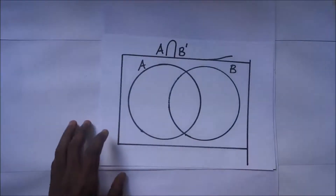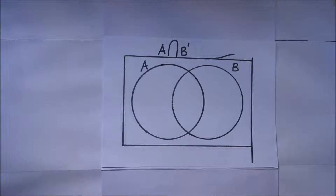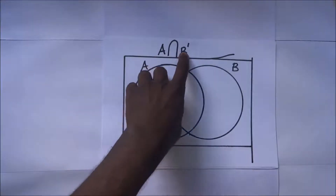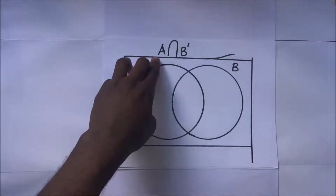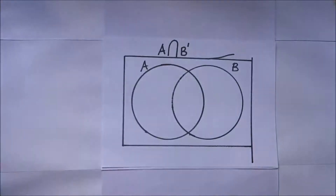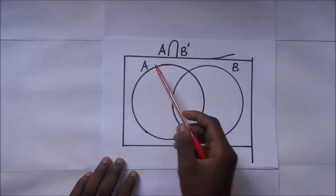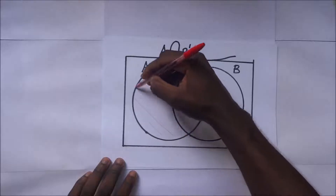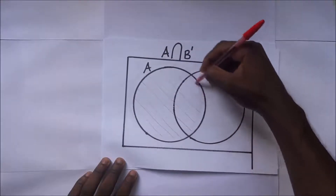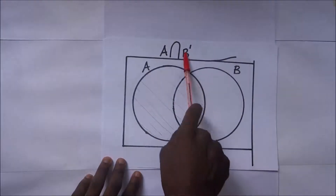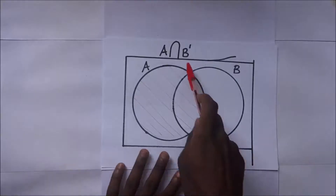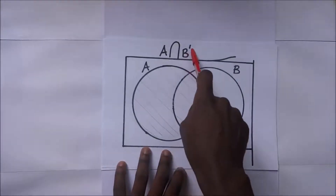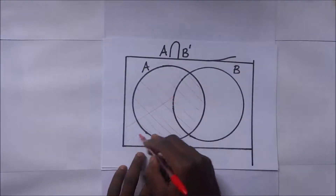Now we have A intersection B complement. Here we have set A and set B complement. They want us to find the intersection between set A and set B complement. Set A is just this region here. Set B complement means anything outside B — we are going to shade everything else but we are not going to shade B. That is what B complement means.